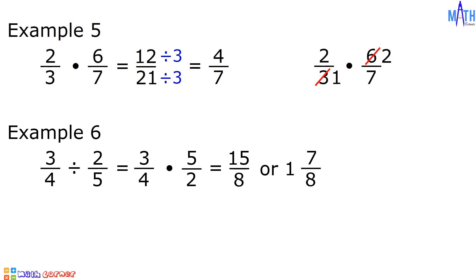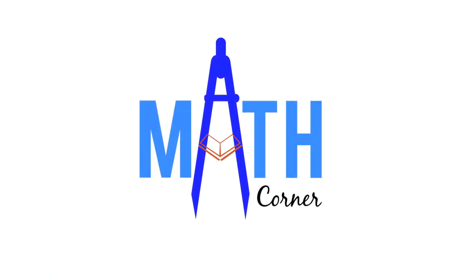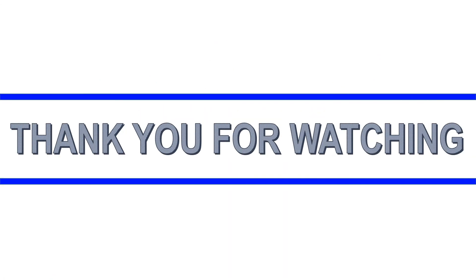Another way in dividing fractions is by using cross multiplication: 3 times 5 is equal to 15, over 4 times 2 is equal to 8. And that is how to perform fundamental operations on fractions. That's all for this video. Thank you for watching.